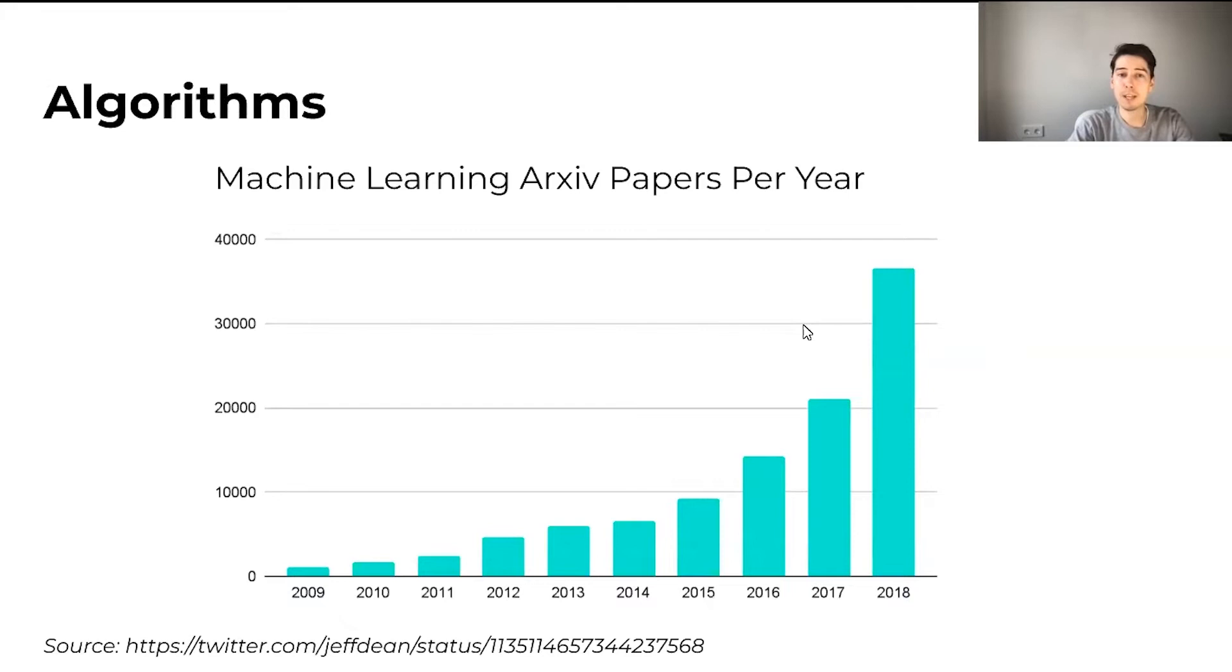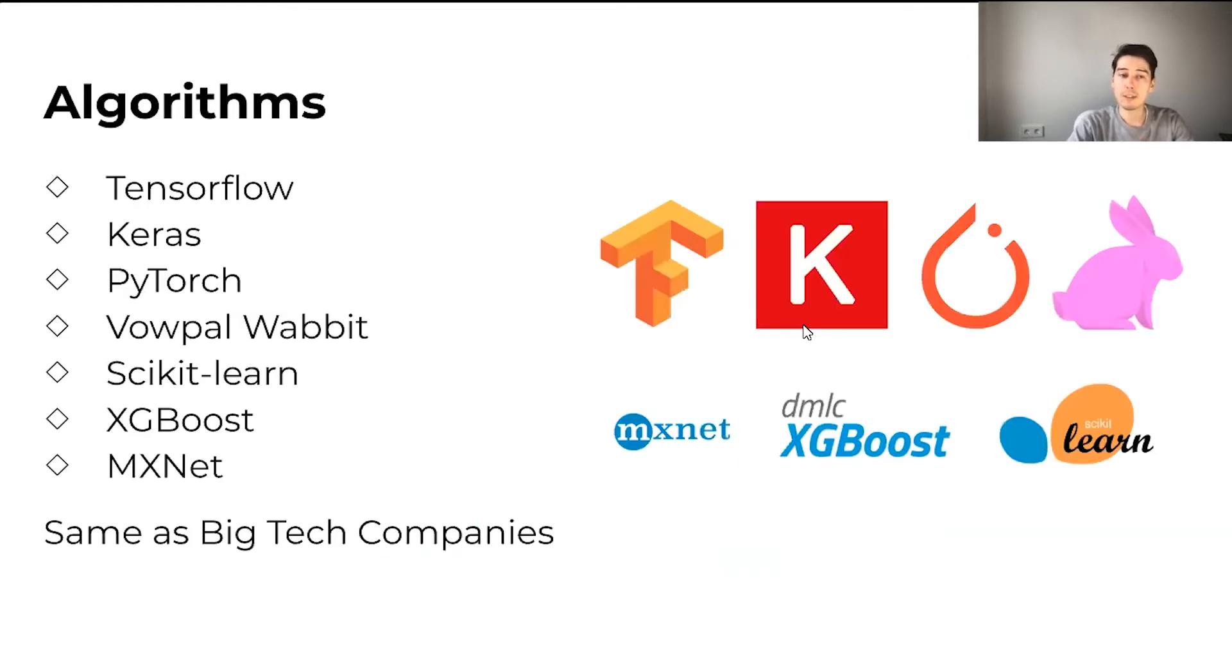The algorithms themselves keep getting better and better. On the chart, you can see the volume of machine learning research basically grows exponentially. There are a lot of different open source machine learning libraries and algorithms that you can use in your products. And these are the exact same algorithms that are used by big tech companies like Google or Amazon.